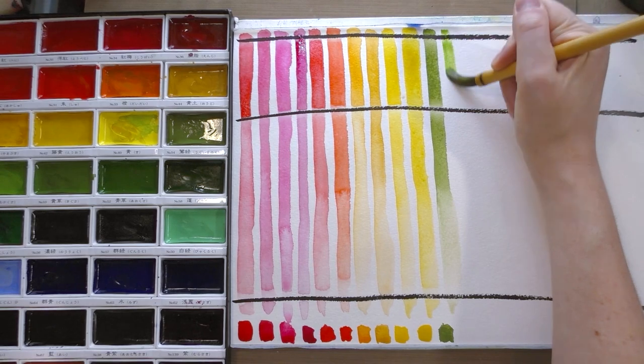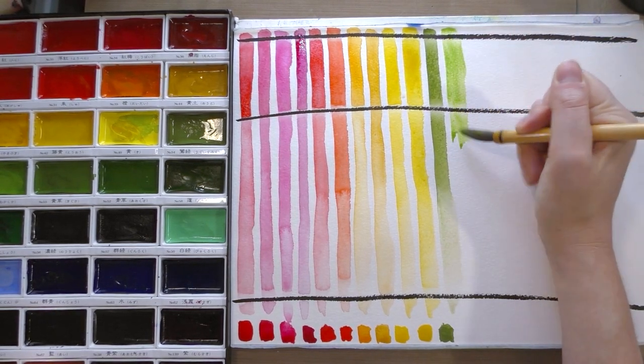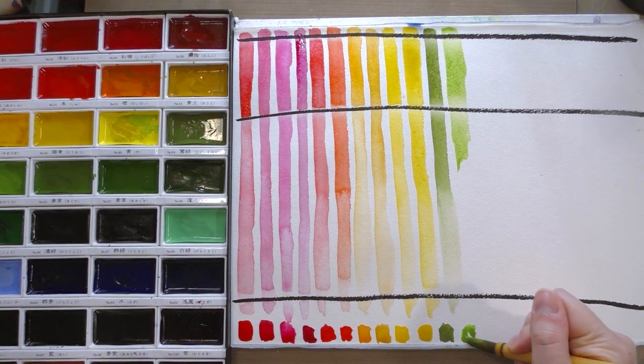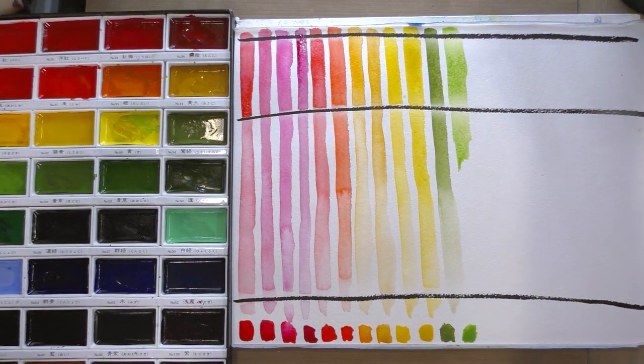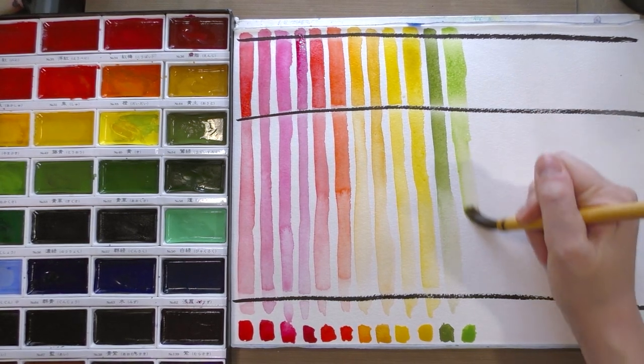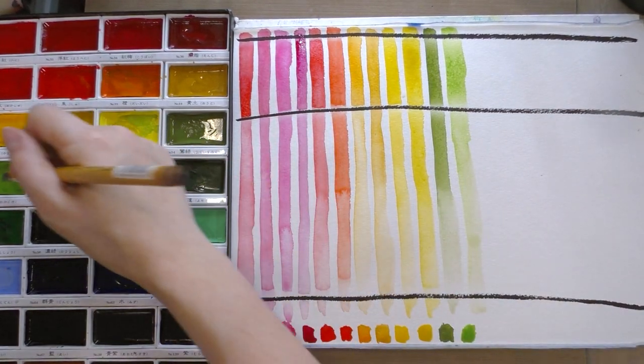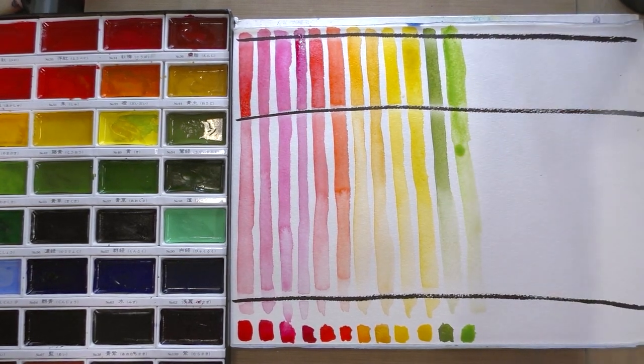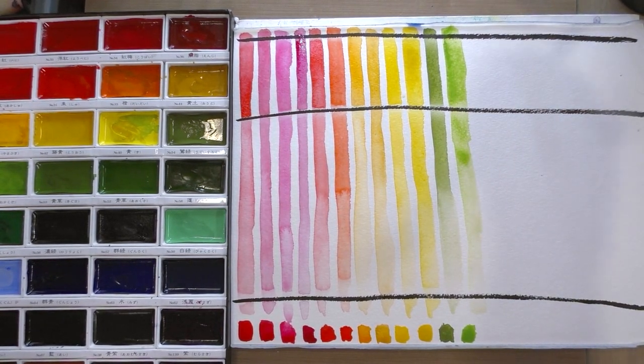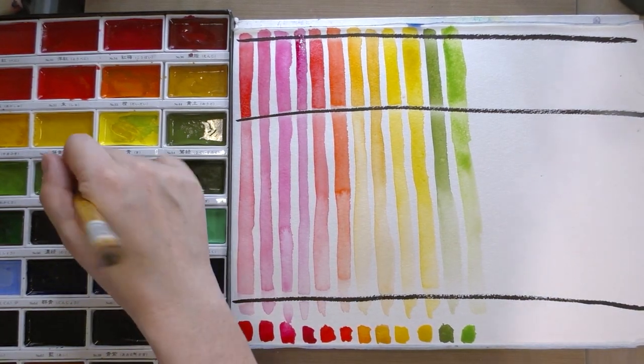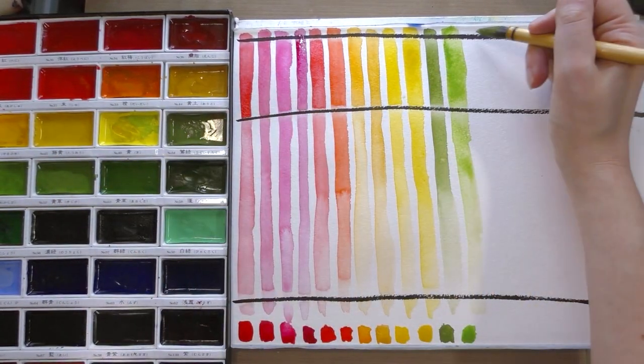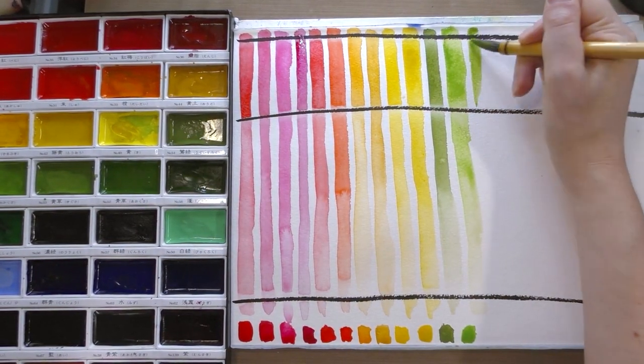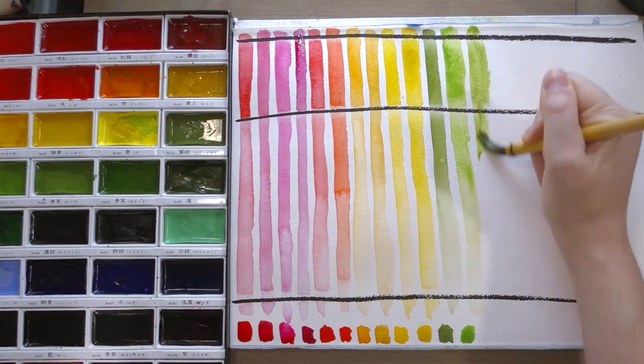Most Gansai Tambi-style watercolors feature large pans that are about the size of three whole Western-style pans. And Kuretake is not the sole manufacturer of these types of watercolors. There's actually several different brands in Japan that will manufacture these, but Kuretake is one of the more common brands in the U.S. I have an overview of different types or different brands of Gansai Tambi watercolors coming up in the future.